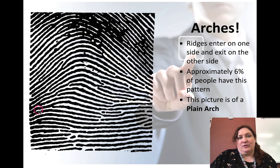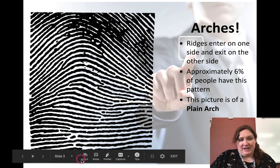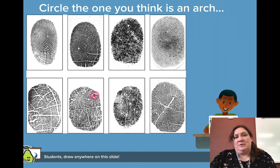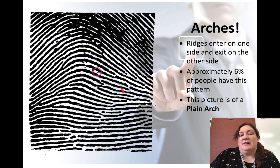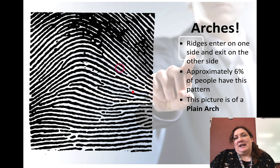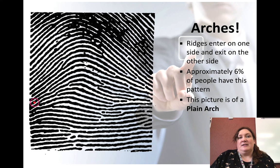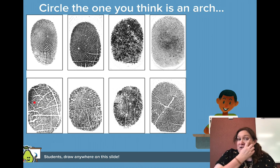Arches — you can enter in on one side and it curves like that in an arc. I'll use my pointer right there. See, that's the arch. Approximately six percent of people have arched patterns. This is a plain arch — notice it comes in on one side and exits out the other side of the print.